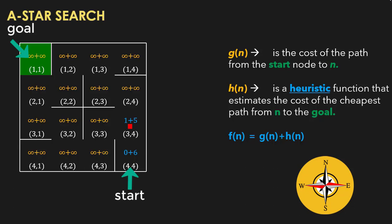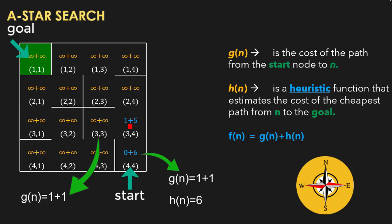Now at cell 3,4, we explore its three neighbors and calculate their costs. For cell 4,4: G of n equals 2, H of n equals 6, total cost is 8. For cell 3,3: G equals 2, H equals 4, total cost is 6. For cell 2,4: G equals 2, H equals 4, total cost is 6. We check if each new cost is better than the previous. For cell 4,4, the previous cost was 6 and the new cost is 8, so we do not update. For the other two cells, the old cost was infinity and the new cost is 6, so we update them.